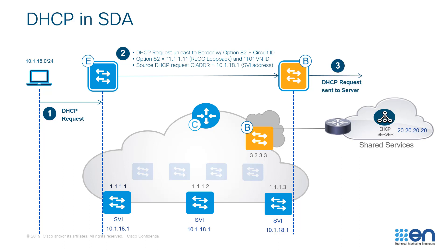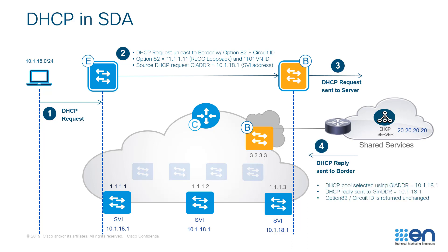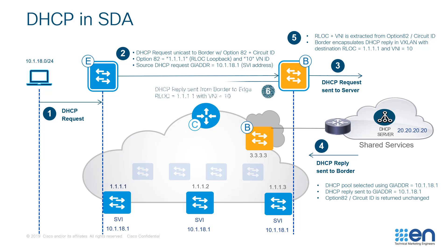The DHCP request is then sent to the DHCP server. The DHCP server will reply, sending back to the border gateway with the option 82 information untouched. At this stage, it is the border gateway that extracts the RLOC and VN information from option 82, so it now knows to which fabric edge device it needs to send the DHCP reply.